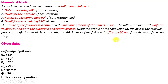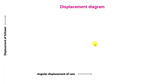In this numerical, two conditions are given. First, the axis of the follower passes through the axis of the camshaft. Second, the axis of the follower is offset by 20 mm from the axis of the camshaft. Now let us start with the displacement diagram.